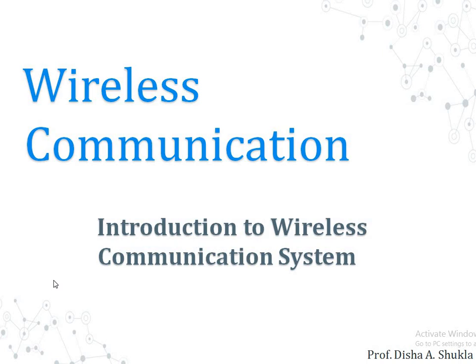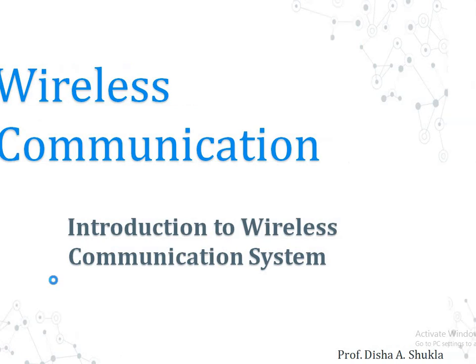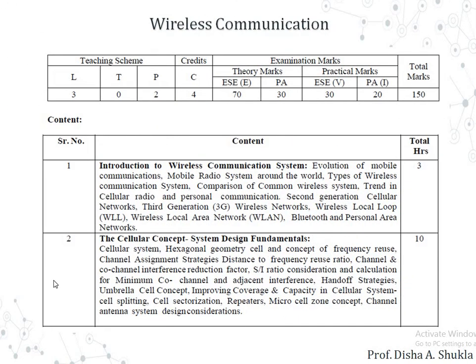This was the basic introduction of wireless communication — what it is, how it operates, and its advantages and disadvantages. Now, in our subject, this is the syllabus that we have been offered. It includes the first chapter — introduction to the wireless communication system — wherein we will be discussing the evolution of mobile communication, mobile radio systems around the world, different types of wireless communication systems, comparison of common wireless systems, trends in cellular radio and personal communication, second generation cellular networks, third generation wireless networks, wireless local loop, wireless local area networks, Bluetooth and personal area networks. The next chapter discusses about the cellular concept.